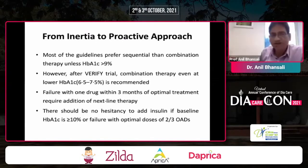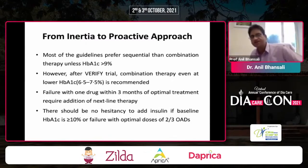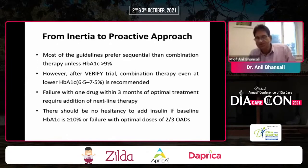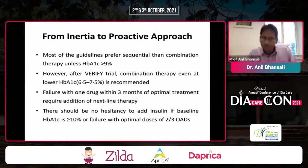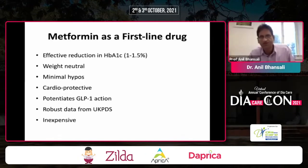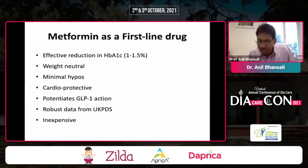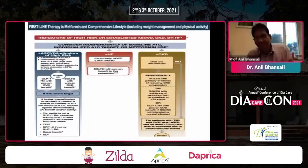The approach has shifted from inertia to a proactive one. Most guidelines prefer sequential then combination therapy, unless HbA1c is more than 9 percent — however, the VERIFY trial showed benefit of combination therapy even at lower HbA1c. Failure with one drug after three months of optimal treatment requires addition of the next line. Do not hesitate to add insulin if HbA1c is more than 10 percent by ADA, more than 9 percent by AACE, or upon failure with optimal doses of two to three agents. Metformin remains the first-line drug — it is effective, causes minimal hypoglycemia, is cardioprotective, and potentiates GLP-1.